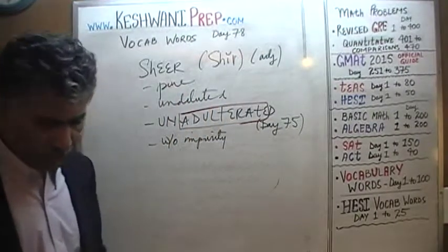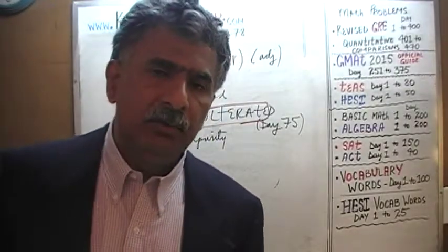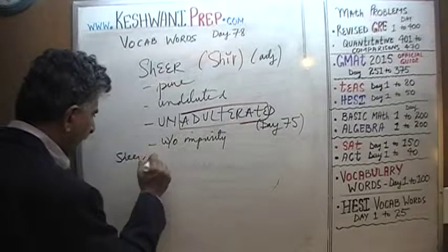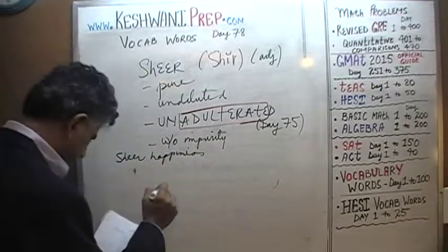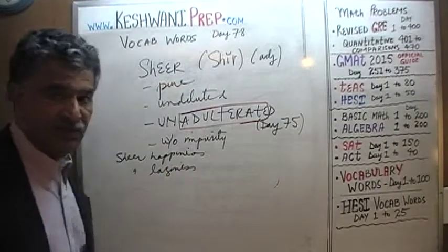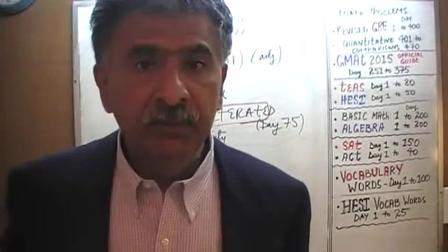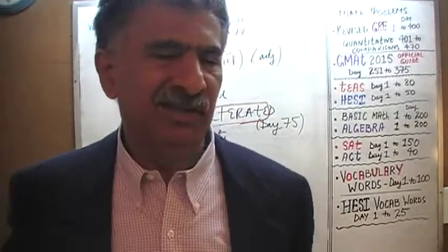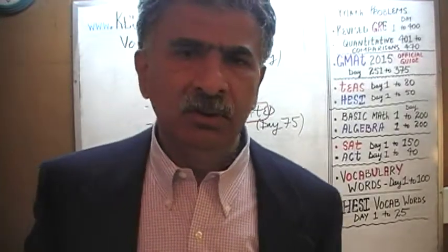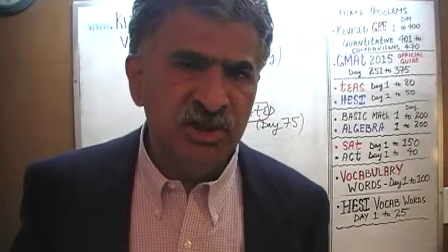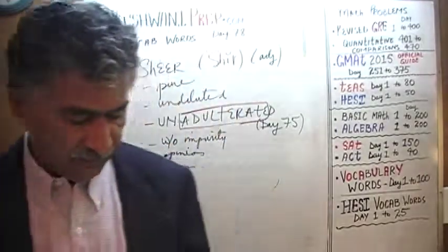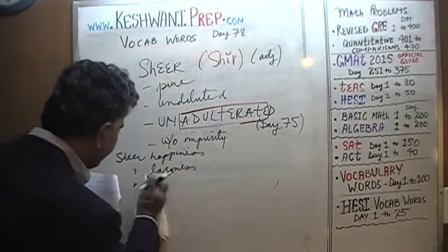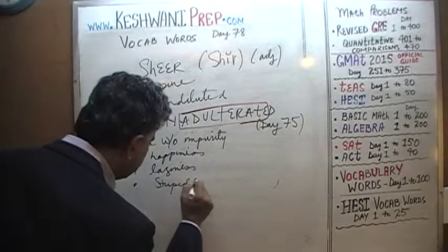The reason to learn this word is that it appears in many different contexts. One would talk about sheer happiness, sheer laziness — for example, 'I didn't finish the project; it was sheer laziness.' Or: 'I got this question wrong out of sheer stupidity' — note that 'out of' is the idiom here, not 'by.' Saying 'by stupidity' would be idiomatically incorrect.